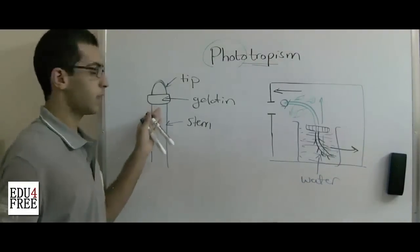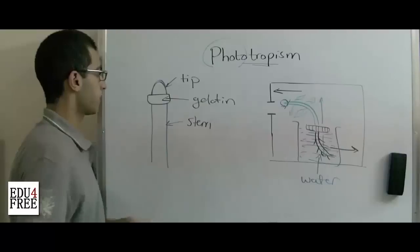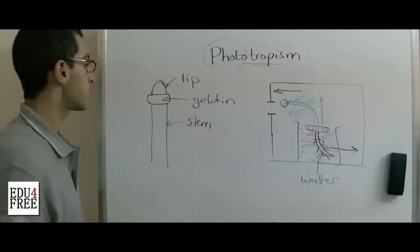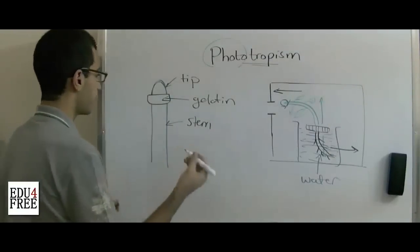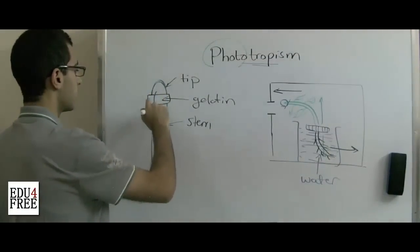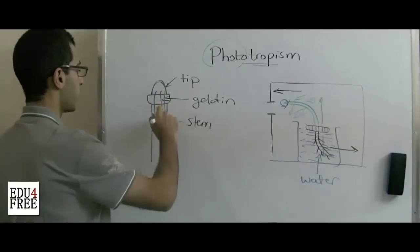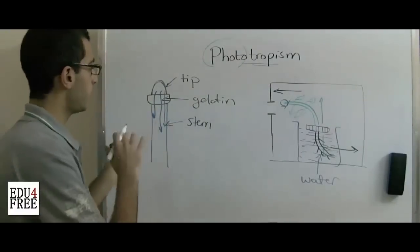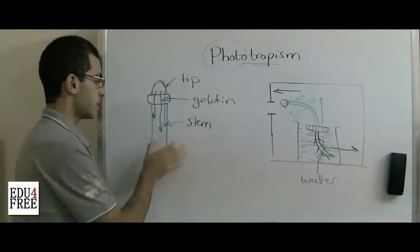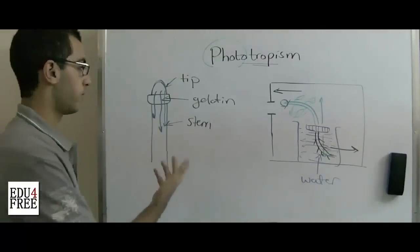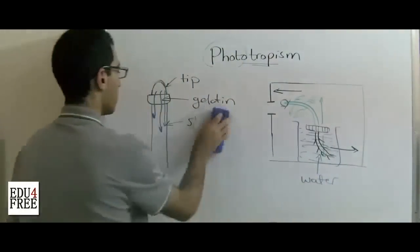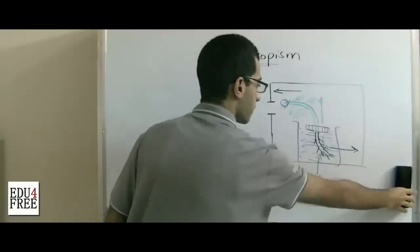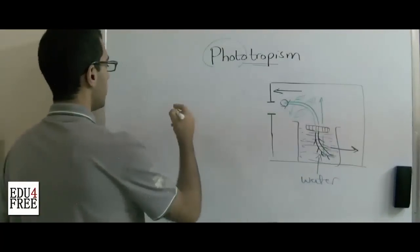We know that the metallic sheet is an insulator and the gelatine connects between the tip and the stem. This indicates that there are some sort of productions of the tip which diffuse through the gelatine and don't diffuse through the metallic sheet. They reach the stem and they lead to the curvature.